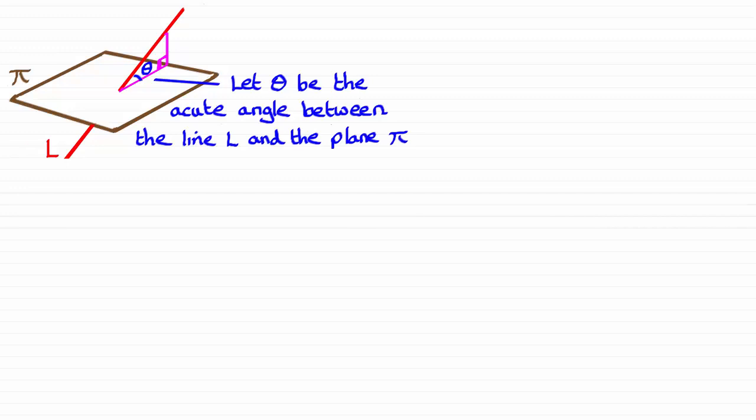Now if I take a side view of what I've got here, it's going to look something like this with our plane pi here, the line L intersecting the plane, and you can see our vertical triangle, it's perpendicular triangle here with the angle theta drawn in.